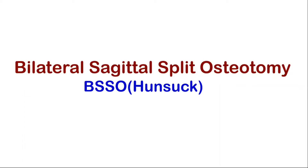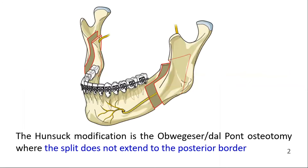we will explain bilateral sagittal split osteotomy as described by Hansak. The Hansak modification is the Obwegeser-Dal Pont osteotomy where the split does not extend to the posterior border. It extends from the inferior border of the ramus to just behind the entrance of the inferior alveolar canal or lingula.